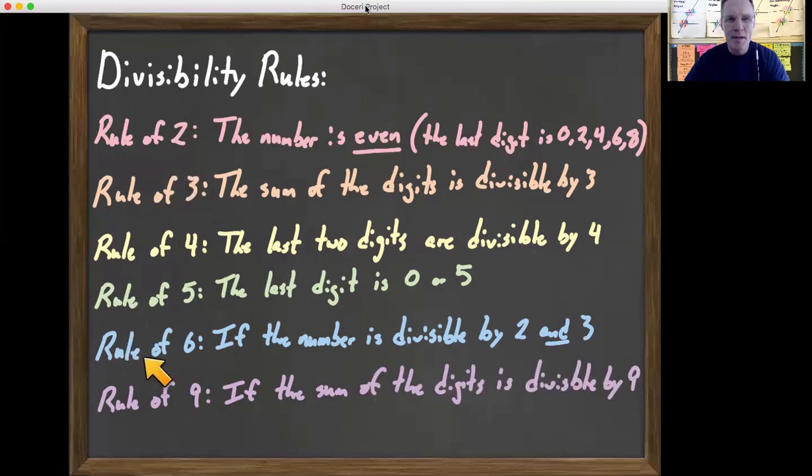I skipped seven because it's kind of a weird rule. I believe it's if you take the last digit and subtract it from the other digits, and if that's divisible by 7. Anyway. And then the rule of 8 is like the rule of 4, only if it's the last three digits, if that's divisible by 8. So like 7,808, that would be divisible by 8.